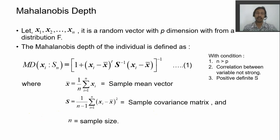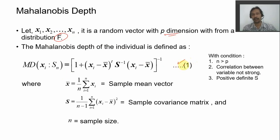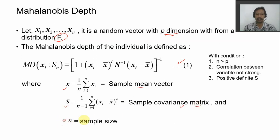What is the Mahalanobis depth? Let us have a sample of size n — x1, x2, and xn — which is p-dimensional with distribution F. The Mahalanobis distance is expressed by equation number one, where x-bar is the sample mean vector, S is the sample covariance matrix, and n is our sample size.